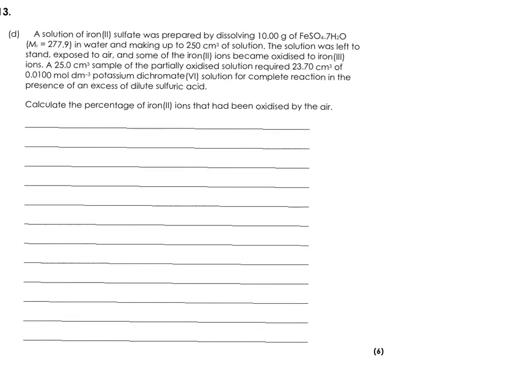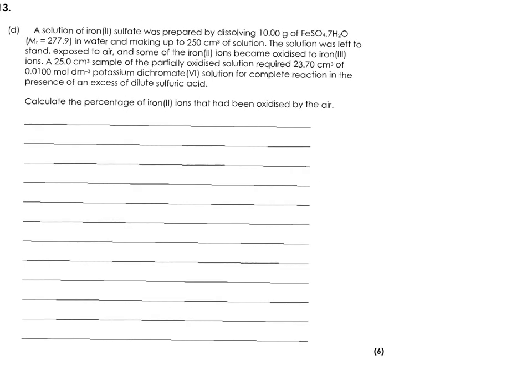So the final question in this set is another redox titration. So let's write out our process. First bit is the equation. So what are we reacting together? We're reacting iron 2 because it's iron sulfate. Remember the sulfate ions are SO4 2 minus. So the iron in that must be iron 2. It also tells you that here.